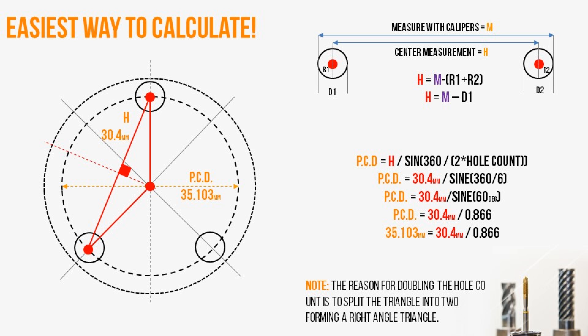What we need to do is imagine that there is a triangle formed between the center of these two holes and the center of our flange. In order to use Pythagorean's theorem to solve this problem, we need to turn that into a right-angled triangle. To do this, we're going to split this triangle into two.